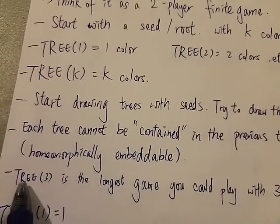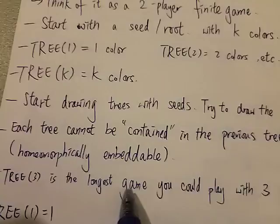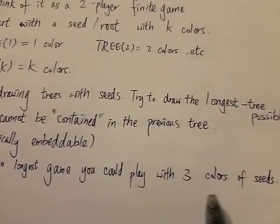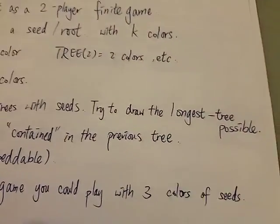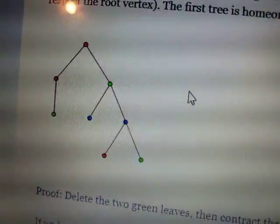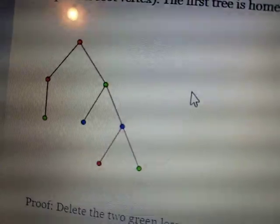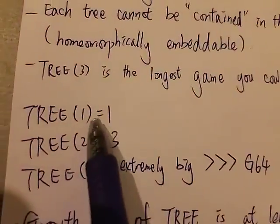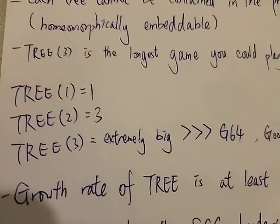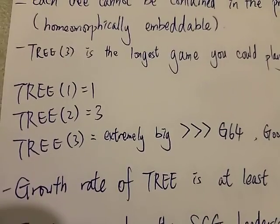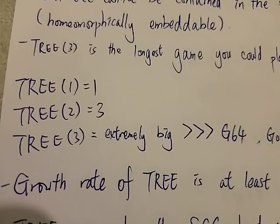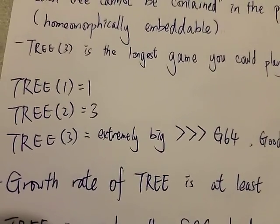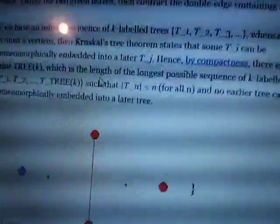TREE(3) is the longest game you could play with three colors of seeds. So here we can try to look at some examples. This is one of the example using three colors red, green, and blue. For TREE(1) the longest game you could play is just one because you can only draw one seed and that's it, the game ends. For TREE(2) the longest game you could play is three.